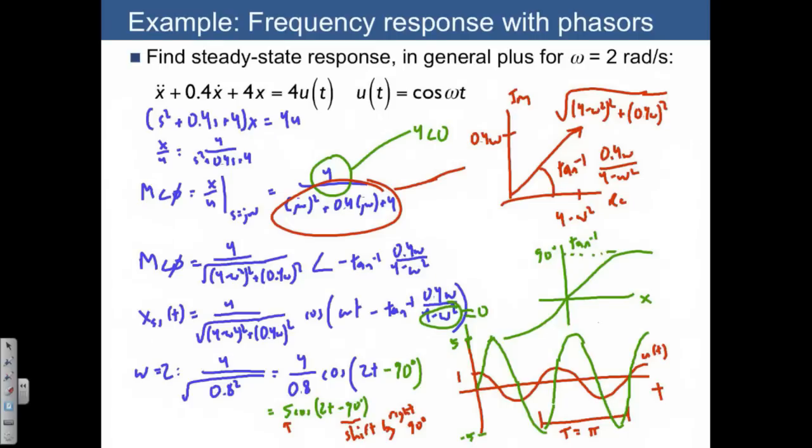So the output is a magnitude of 5 and it's shifted to the right by 90 degrees. So it also has a period of pi.